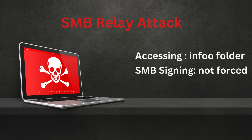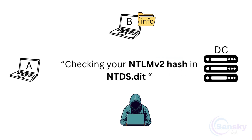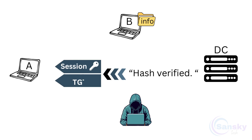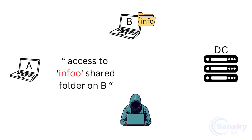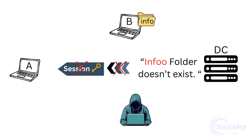As you can see here, in front of the folder name we have the word info with a double O. So in this scenario, everything is just as before — client A logs in to the domain by sending its NTLMV2 hash to the DC, and the DC verifies it by checking its NTDS file, then provides A with the session key and TGT. However, this time, client A mistakenly types an extra O at the end of the folder's name. The DC informs A that such a folder does not exist on this domain — there is no folder called infoo — so the DC does not generate any second session key for system A.